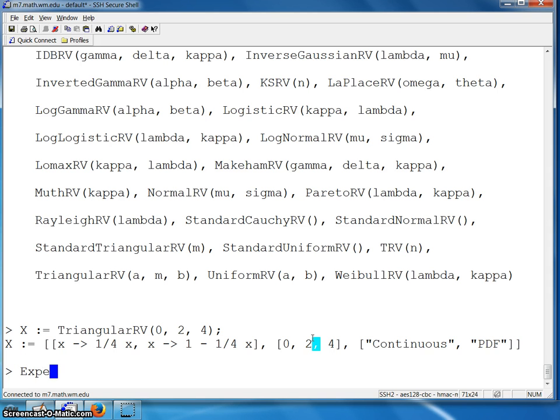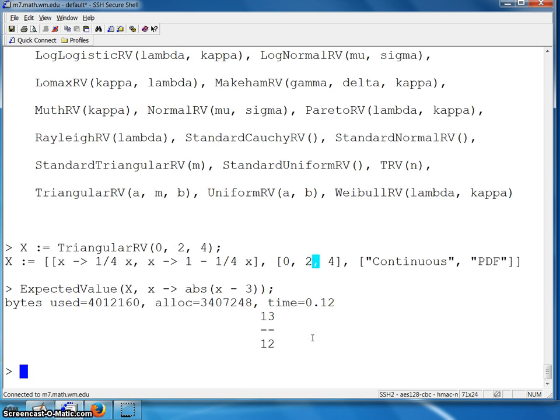And then when we want the expected value, there is a routine called expected value. And that routine says use X as your random variable. But instead of getting the expected value of X, you would get that just by typing the mean of X. You want the absolute value of X minus 3. That's the particular expected value that you want. And that comes back with 13 twelfths. Again, saving a few steps of integration.